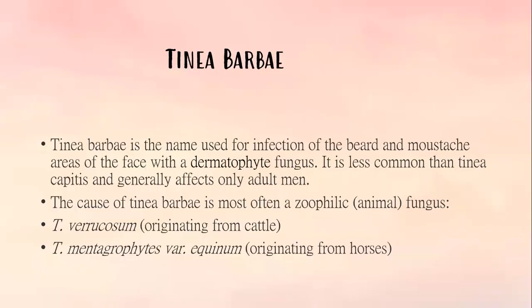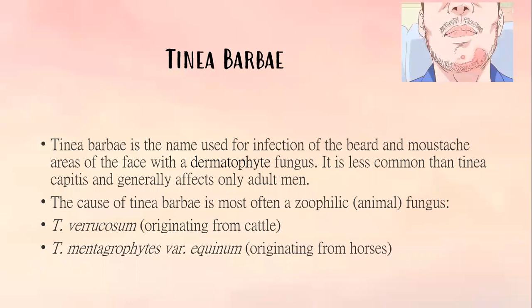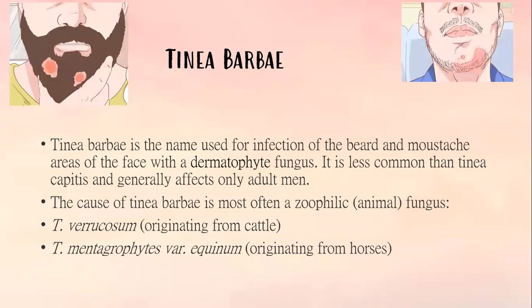The next type of tinea is tinea barbae. Tinea barbae is the name used for infection of the beard and mustache areas of the face with a dermatophyte fungus. It is less common than tinea capitis and generally affects only adult men. The cause is most often a zoophilic animal fungus, trichophyton verrucosum, which originates from cattle, and trichophyton mentagrophytes var. equinum from horses.